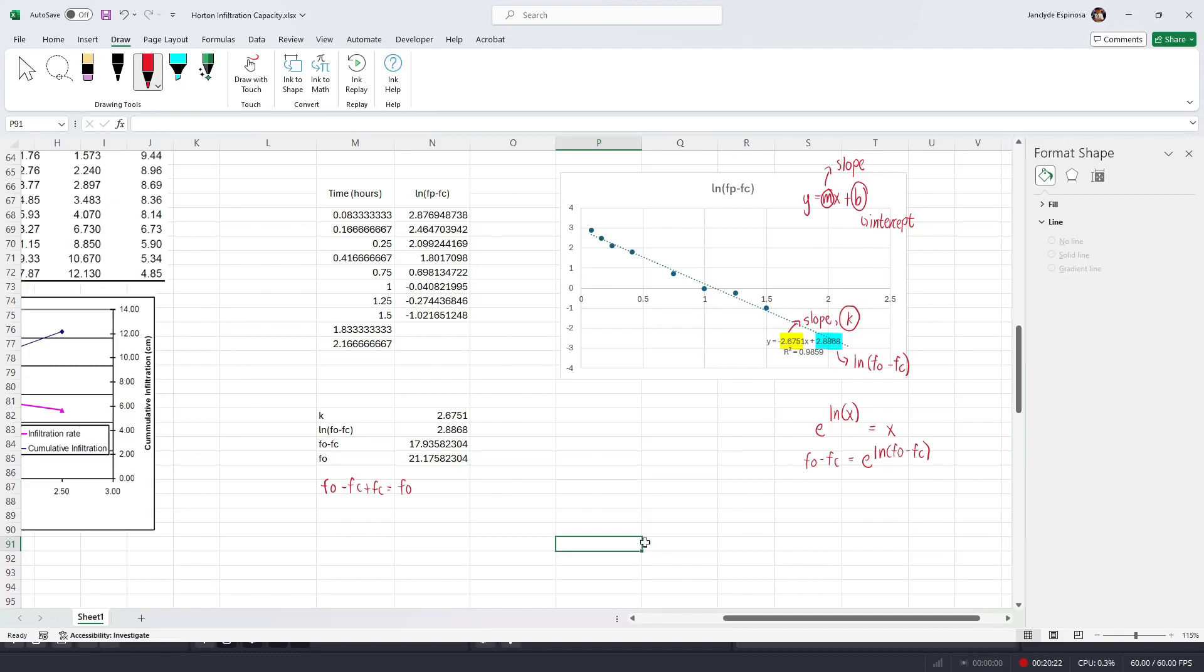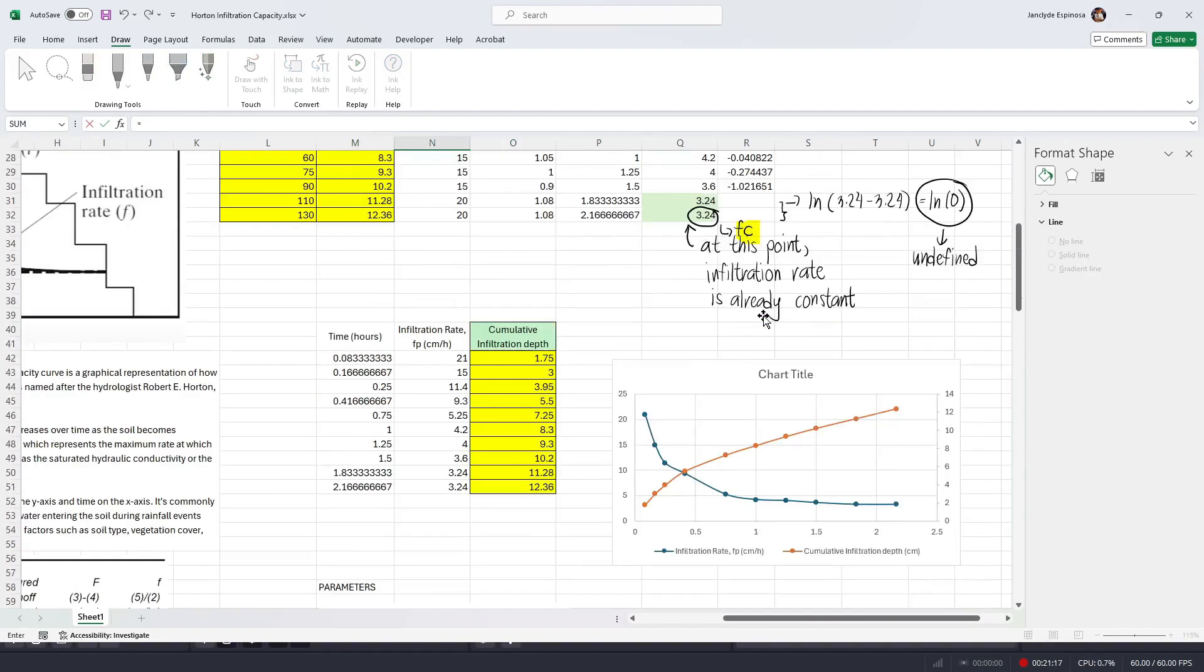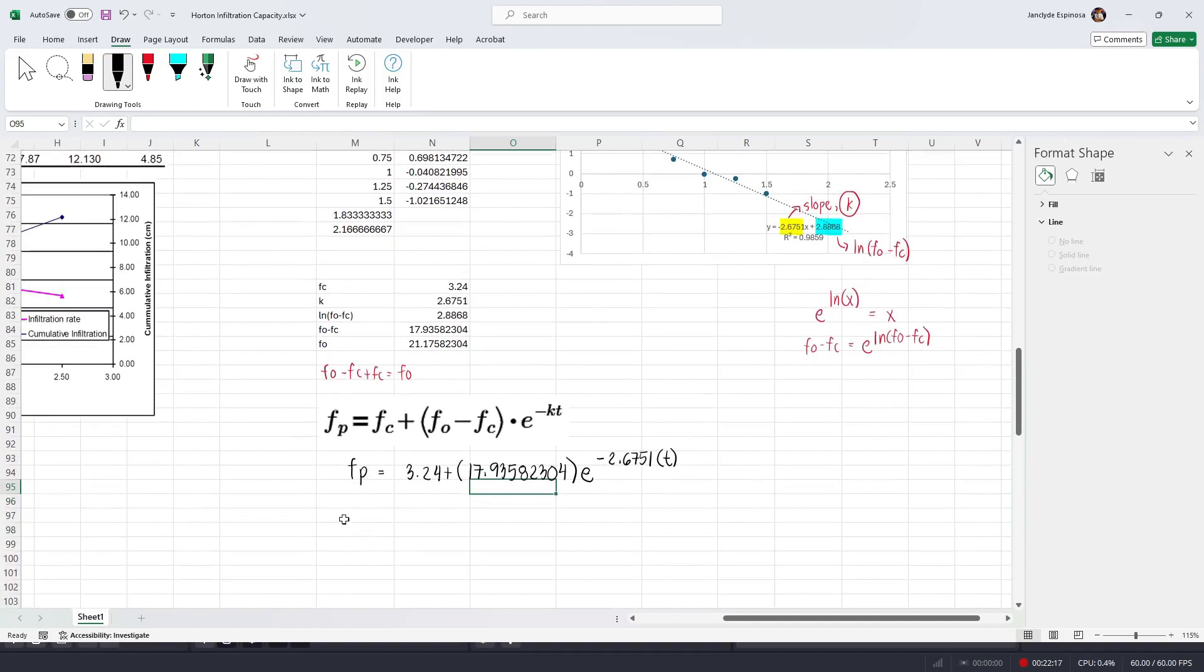Now, we already obtained all the constants in Horton's equation. And so we're gonna plug in these values so that we can form the equation that's gonna define the cumulative infiltration rate at any given time. Let's copy the equation above so we can directly substitute the values. So we have fp equals fc, which is 3.24, and then plus f sub o minus fc, which is 17.93582304, and we have determined k to be 2.6751. Now, since the time t is our independent variable, we're gonna retain that one.